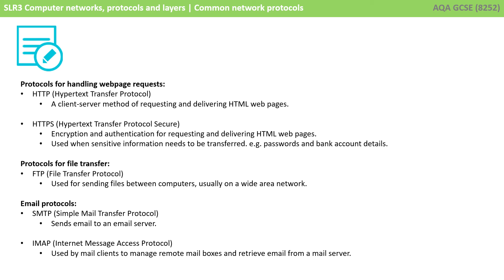There are two protocols to be aware of for handling web page requests: HTTP, a client-server method of requesting and delivering HTML web pages, and HTTPS, the same as HTTP but with added encryption and authentication. You need to know about the File Transfer Protocol, which is used for sending files between computers, usually on a wide area network. And finally, you need to know about two email protocols: SMTP for sending email to an email server, and IMAP, used by mail clients to manage remote mailboxes and retrieve email from a mail server.